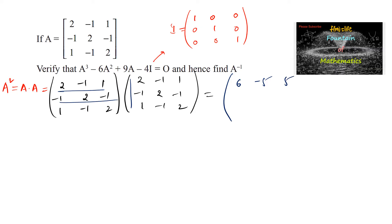Second row with first column: -2-4=-6, -6+1=-5. Second row with second column: 1+4=5, 5+1=6. Second row with third column: -1-2=-3, -3-2=-5. Third row with first column: 2+1=3, 3+2=5. Third row with second column: -1-2-2=-5. Third row with third column: 1+1+4=6. So A² = [6, -5, 5; -5, 6, -5; 5, -5, 6].